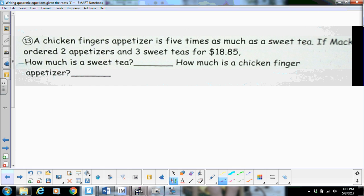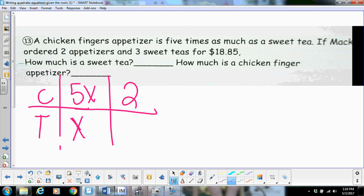But I am going to look at number thirteen. Okay, this is our chart problem. Okay, so we've got chicken fingers and we've got sweet tea. Alright, chicken fingers are five times as much as tea. So our tea is going to be x and chicken fingers will be five x.